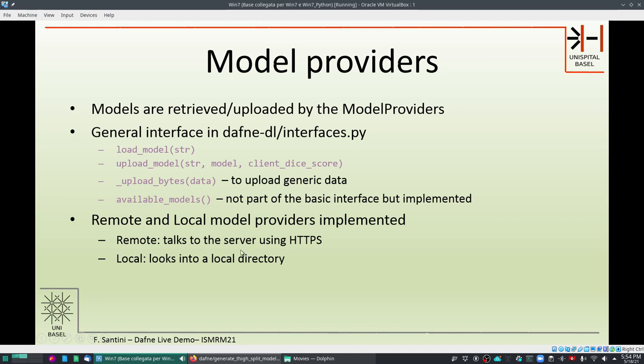In principle you don't really need to know this because local and remote model providers are implemented. So remote model provider is talking to our Daphne server and the local model provider is looking into a default local directory if you want to have just local models or if you have already downloaded some models in the past and you don't want to update them anymore. The remote model providers and the local model providers also implement an available models function that informs Daphne of what models are available.